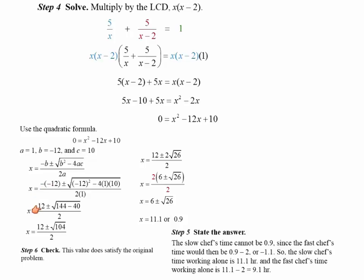Here with minus times minus 12, give me 12. 12 squared give me 144. When I multiply negative 4 times 1 times 10, give me minus 40. What I get under the radical would be 104. So I get two answers. 12 plus square root of 104 over 2, or 12 minus square root of 104 over 2.